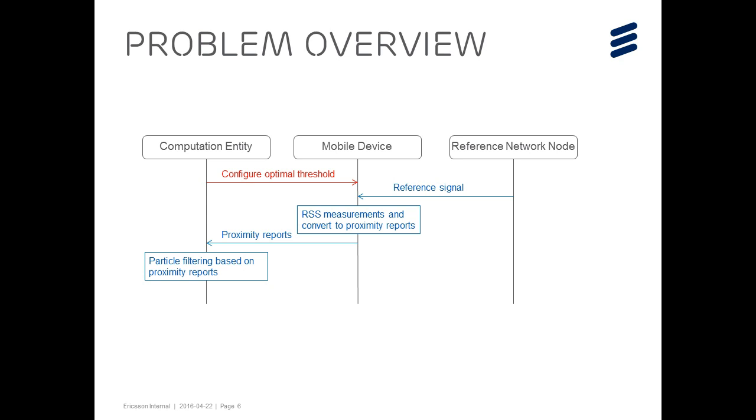So, after we have obtained the optimal threshold, the computation entity will configure the mobile device with this threshold. And the mobile device will measure the reference signal from the network node. And then, it will compare the received signal strength with the threshold and convert it into proximity report. And further, the mobile device will send the proximity reports to the computation entity for possible filtering to get the position estimation.